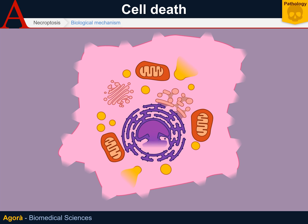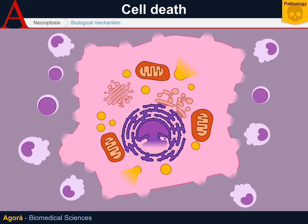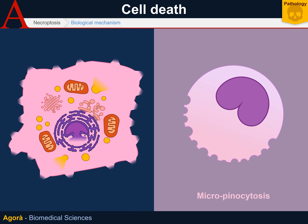In terms of inflammation, necroptosis is similar to necrosis, since the released molecules lead to tissue invasion by inflammatory cells. Moreover, inflammatory cells attracted by these molecules don't carry out simple phagocytosis, but macro-pinocytosis — phagocytosing large quantities of extracellular liquid containing the molecules leaked from the dead cell. These molecules are then exposed via MHC class 2 antigens, so necroptosis induces a powerful activation of the adaptive immune system. This activation is actually its goal, since necroptosis arises in order to alert the immune system.